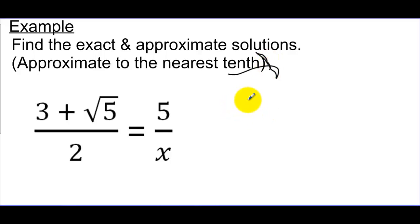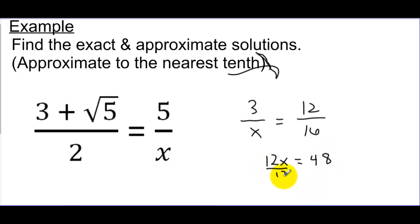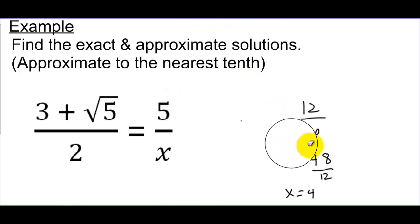If you did something like 3 over x is equal to 12 over 16, for example, we're going to just cross multiply. We can say 12 times x is 12x, and 3 times 16 is 48. Then we can just solve — divide both sides by 12, and we find out that x has to be 4. So we cross multiply a numerator and a denominator with a numerator and a denominator. We're going to do the same thing, but our problem is just going to have radicals in it.